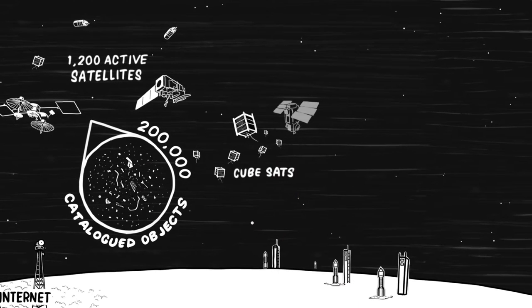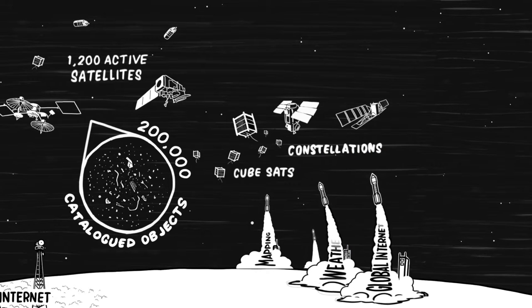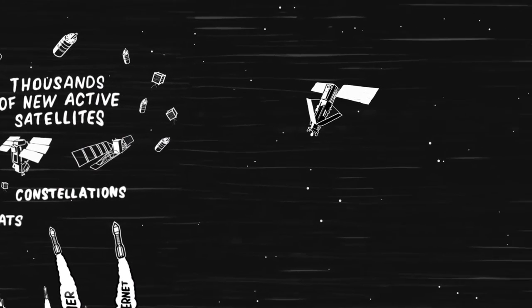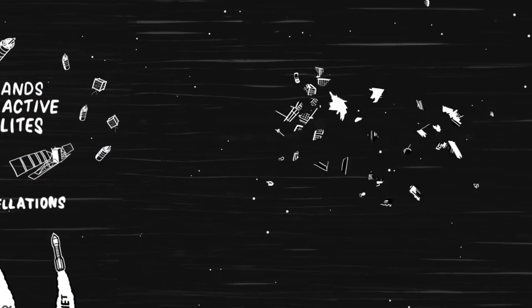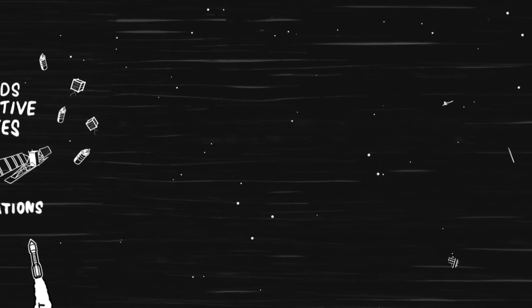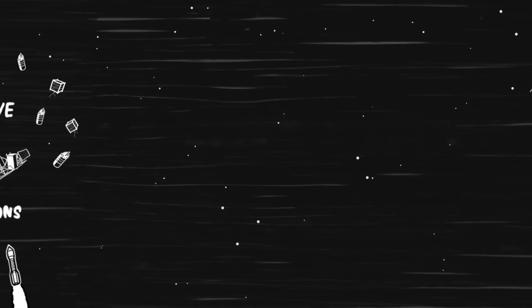Inexpensive CubeSats and large planned commercial constellations will soon add great capabilities and thousands of new active satellites. Collisions between two orbiting objects create thousands of pieces of hazardous debris, traveling at 17,500 miles per hour in low Earth orbit.